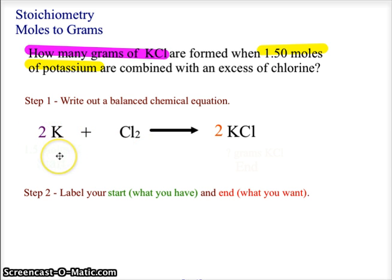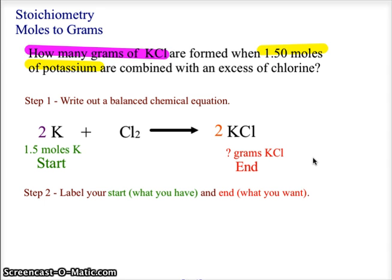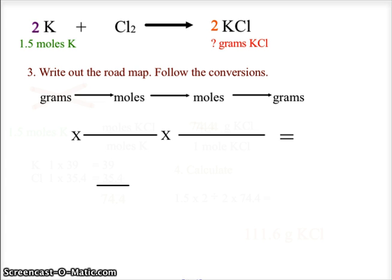We also need to add a 2 in front of the potassium on the reactant side. Now we label what we're starting with and what we want to end with. From the question, we're starting with 1.5 moles of potassium and we want to end with grams of KCl. Once labeled, we can set up the problem. I always start with the full roadmap: grams to moles to moles to grams.